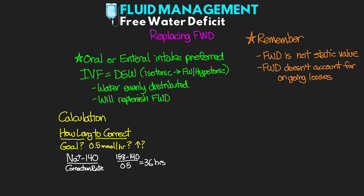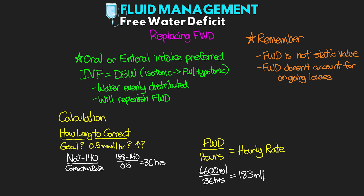Once we know how long to correct, we need to divide the free water deficit by the number of hours that we just calculated to get our hourly rate — either to give them enterally or via IV with D5 water. For our gentleman, we're talking 6.6 liters or 6,600 milliliters divided by 36 hours, which equals 183 milliliters per hour. Now again, this does not include ongoing losses. We would need to figure out what we expect their losses to be over that period of time in which we're replacing this free water deficit and then increase the rate to make sure we're also covering those losses as well.